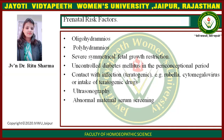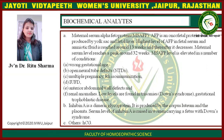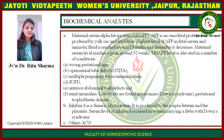Ultrasonography, abnormal maternal serum screening, and biochemical analysis include maternal serum alpha-fetoprotein (MSAFP). AFP is an oncofetal protein produced by the yolk sac and fetal liver. The highest level of AFP in fetal serum and amniotic fluid is raised around 13 weeks, thereafter it decreases. Maternal serum level reaches a peak around 32 weeks.